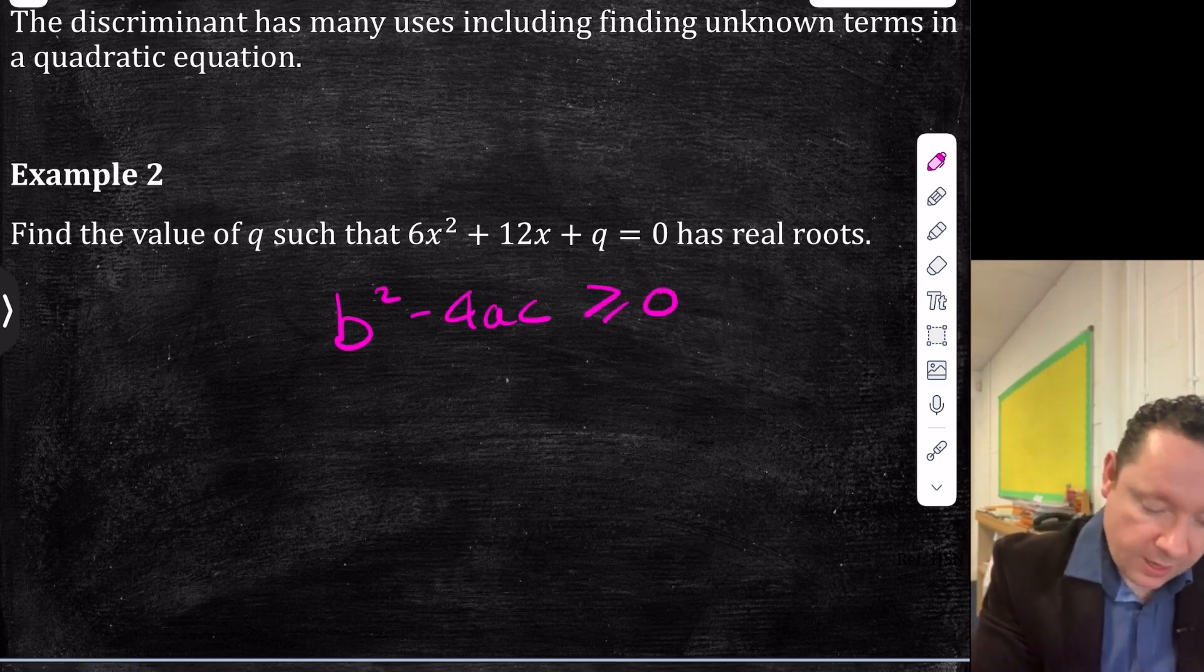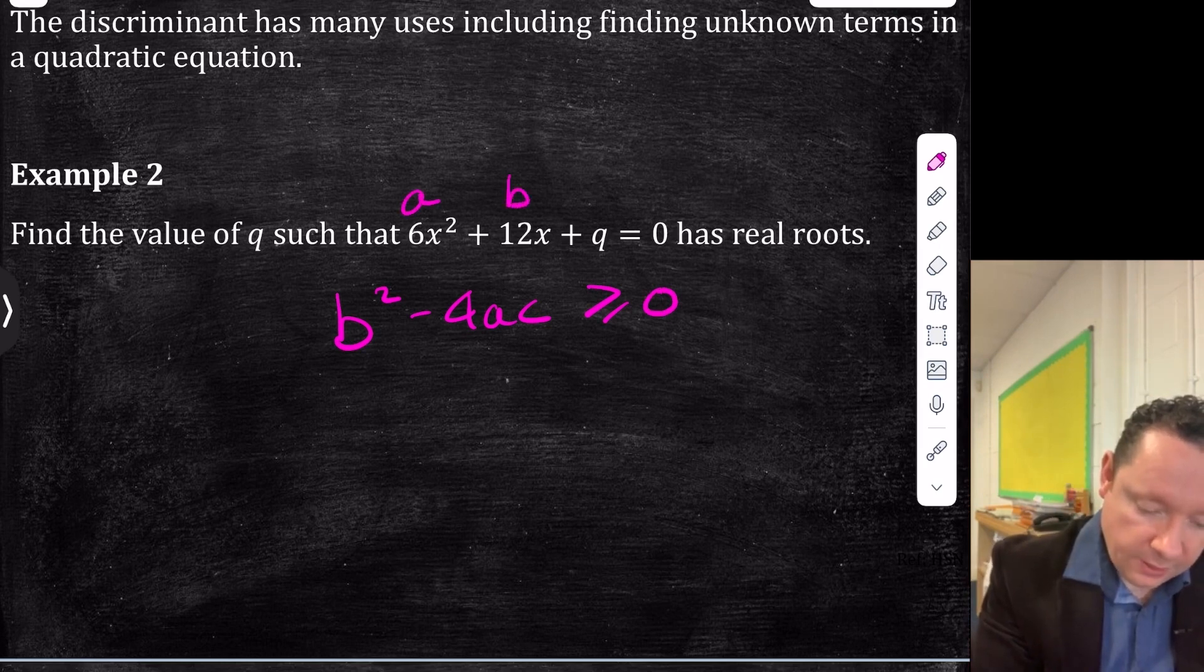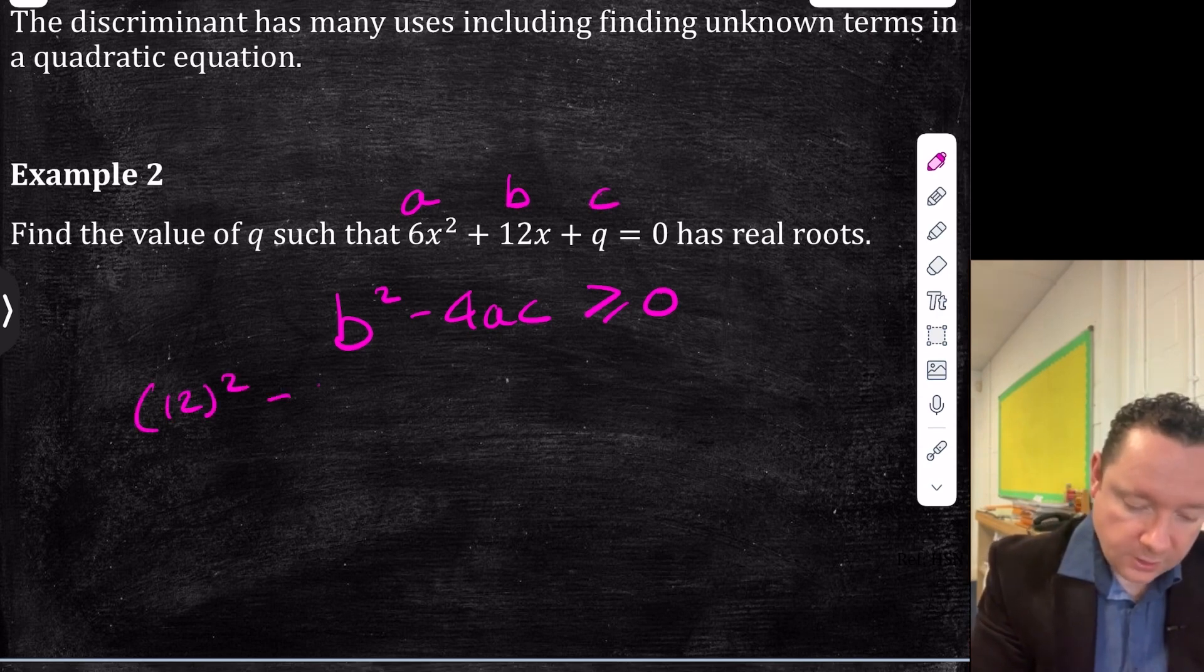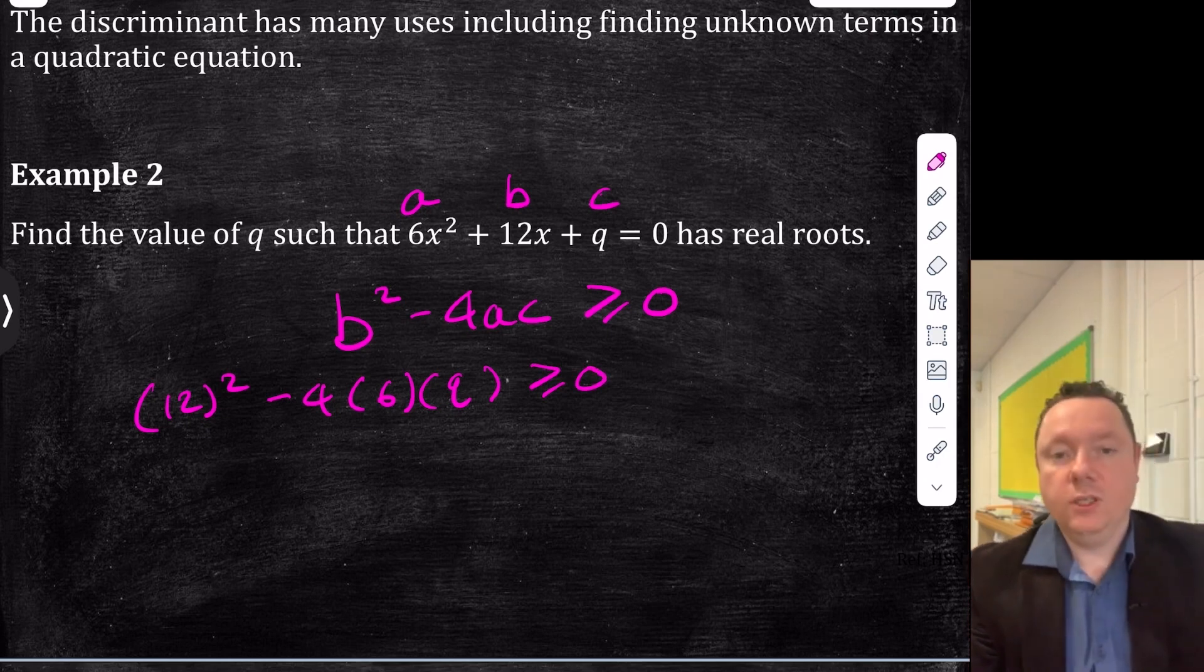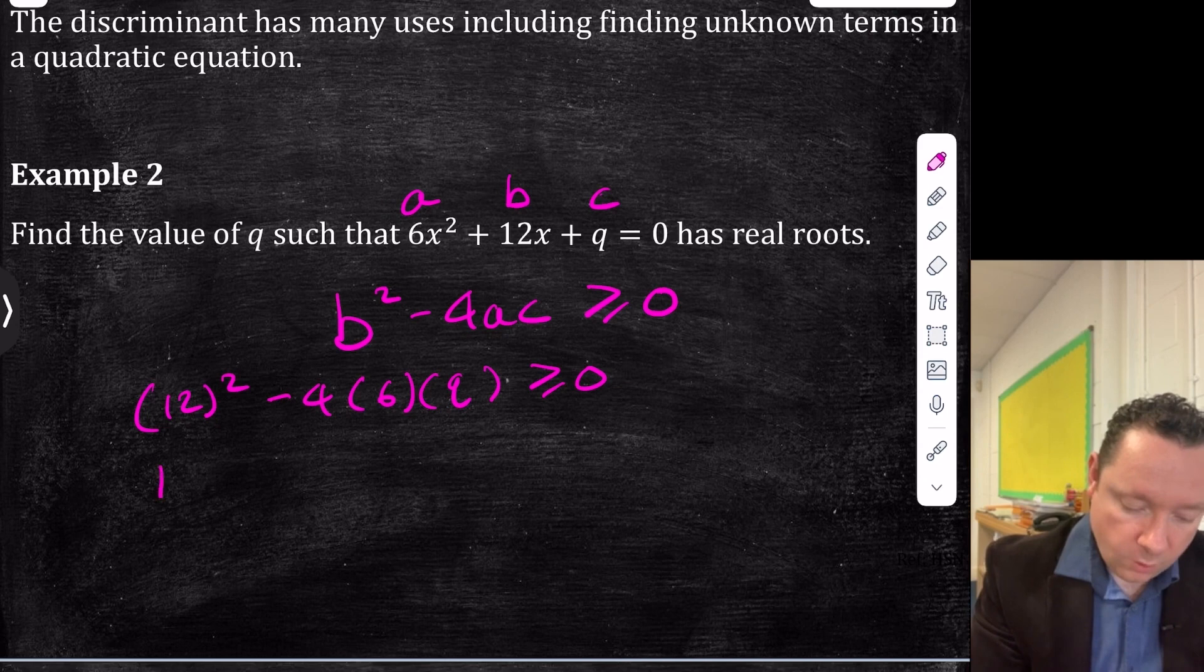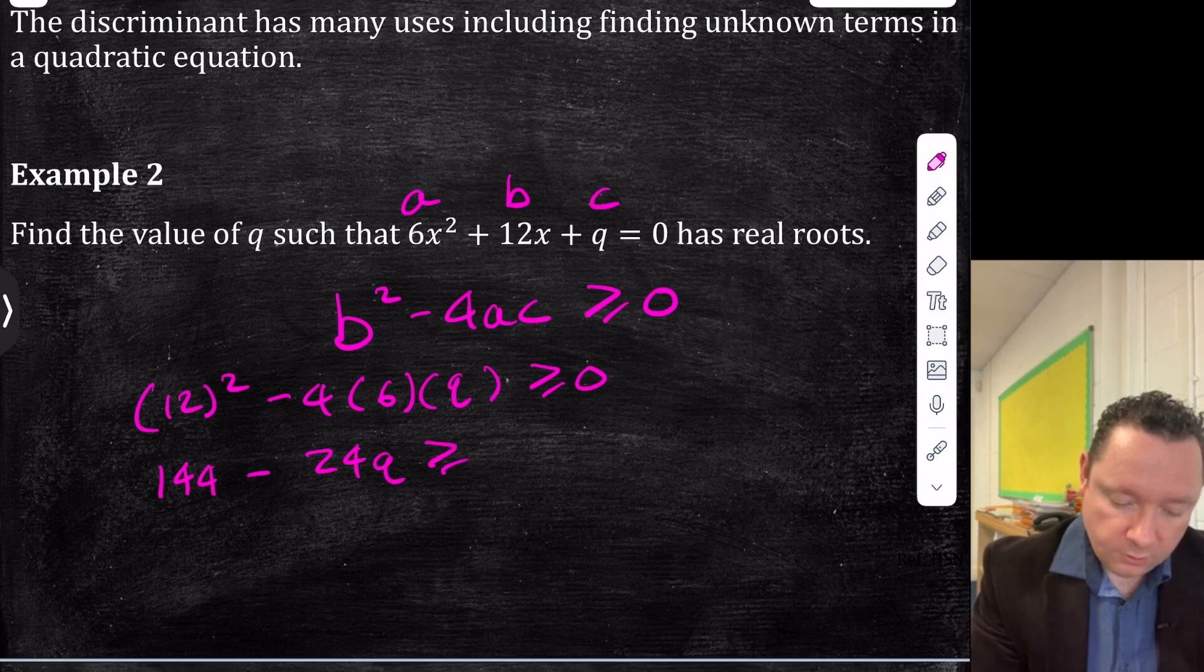So remember that's our a, that's our b, and our c would be q. So we're just subbing it all in. 12 squared minus 4 times 6 times q is greater than or equal to zero. We need to solve this inequality. 12 times 12 is 144. So you get 144 minus 24q is greater than or equal to zero. So that means that 144 is greater than or equal to 24q.